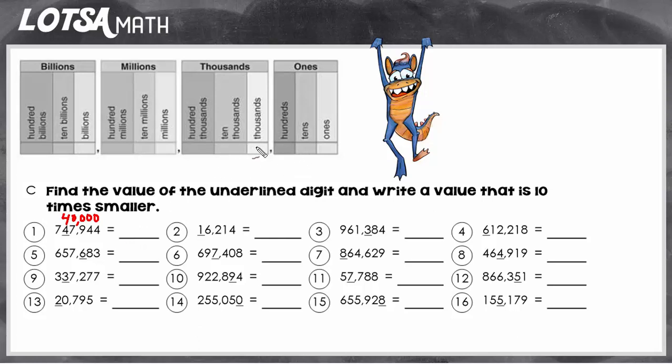And to do that, we have to understand that the relationship between the place values is like this. As we move to the left, we are increasing ten times. So every time we move a place to the left, it's getting ten times bigger.